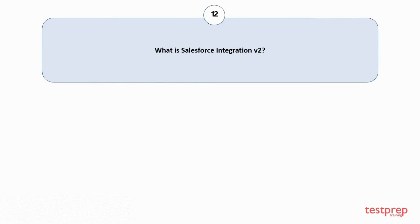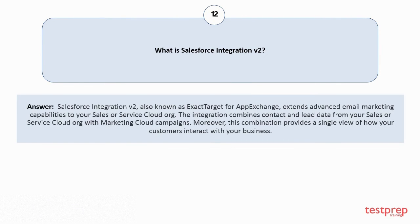Question number 12: What is Salesforce Integration v2? Salesforce Integration v2, also known as ExactTarget for AppExchange, extends advanced email marketing capabilities to your sales or service cloud org. The integration combines contact and lead data from your sales or service cloud org with marketing cloud campaigns. Moreover, this combination provides a single view of how your customers interact with your business.